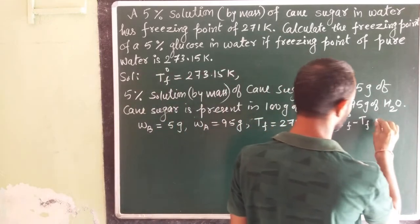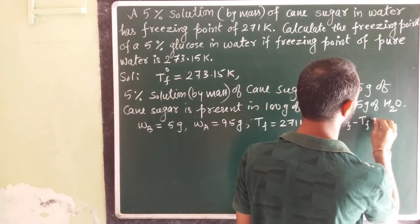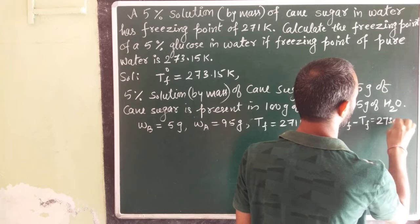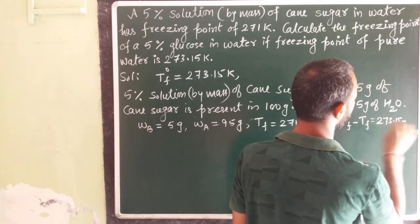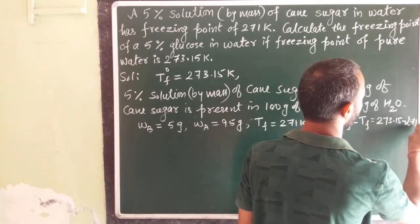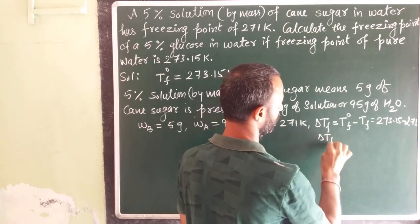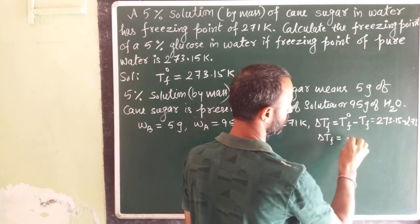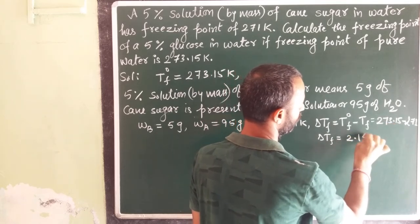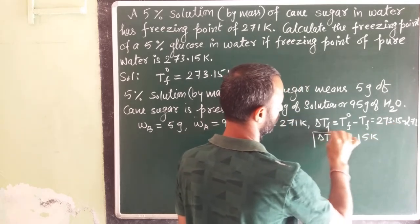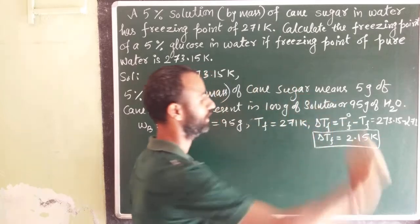T0F is 273.15 minus Tf 271, so from here delta Tf comes out to be 2.15 Kelvin. This is delta Tf.